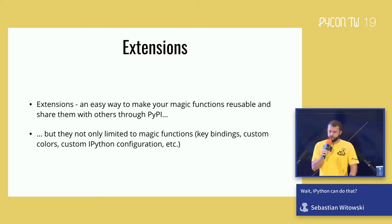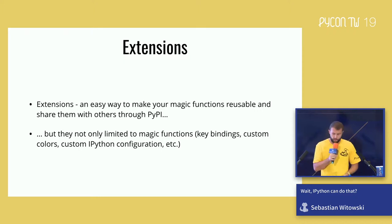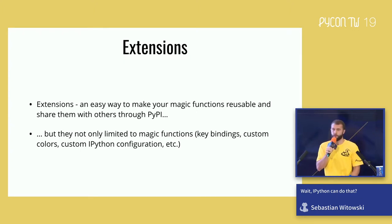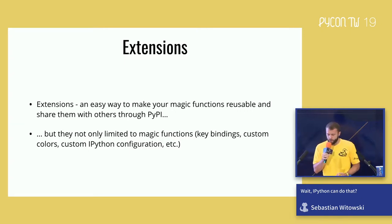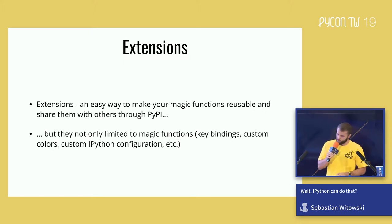Creating magic functions is easy, but to run our magic function we had to copy and paste our code into IPython, which is very inconvenient if you want to run it often. So we might want to turn our magic function into an extension. Extensions in IPython are an easy way to make your magic functions reusable and share them with others. They're not limited to magic functions — you can write code that modifies any part of IPython, like custom key bindings, custom colors, modifications to the IPython configuration, and turn that code into an extension.